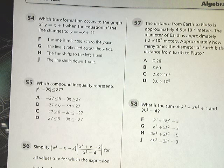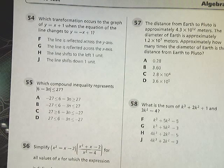Tennessee Intercourse Practice Test for Algebra 1. This is question number 54. Which transformation occurs to the graph of y equals x plus 1 when the equation of the line changes to y equals negative x plus 1?